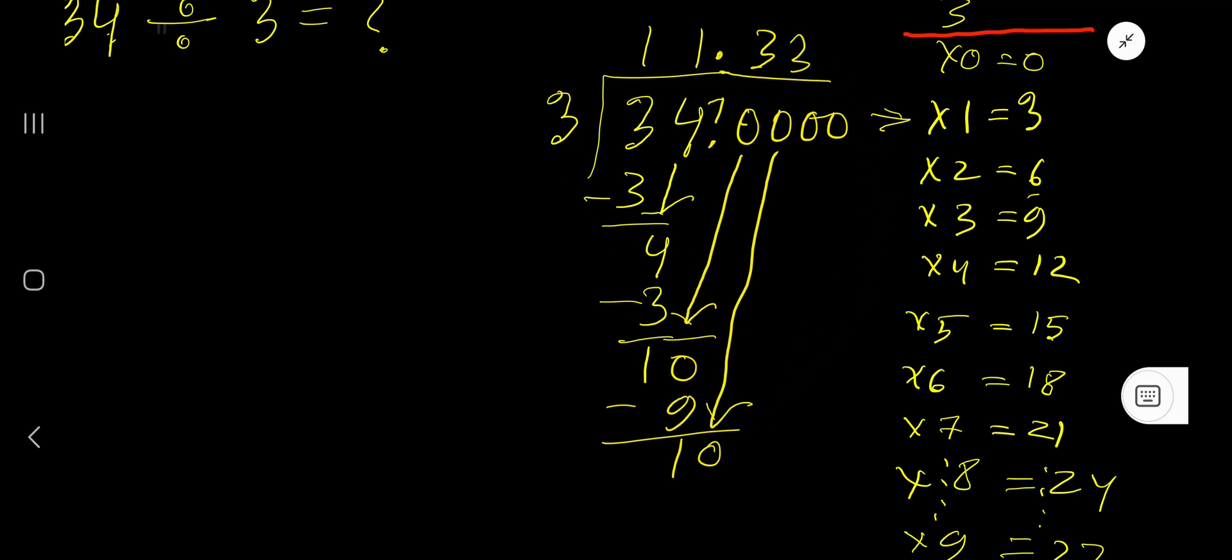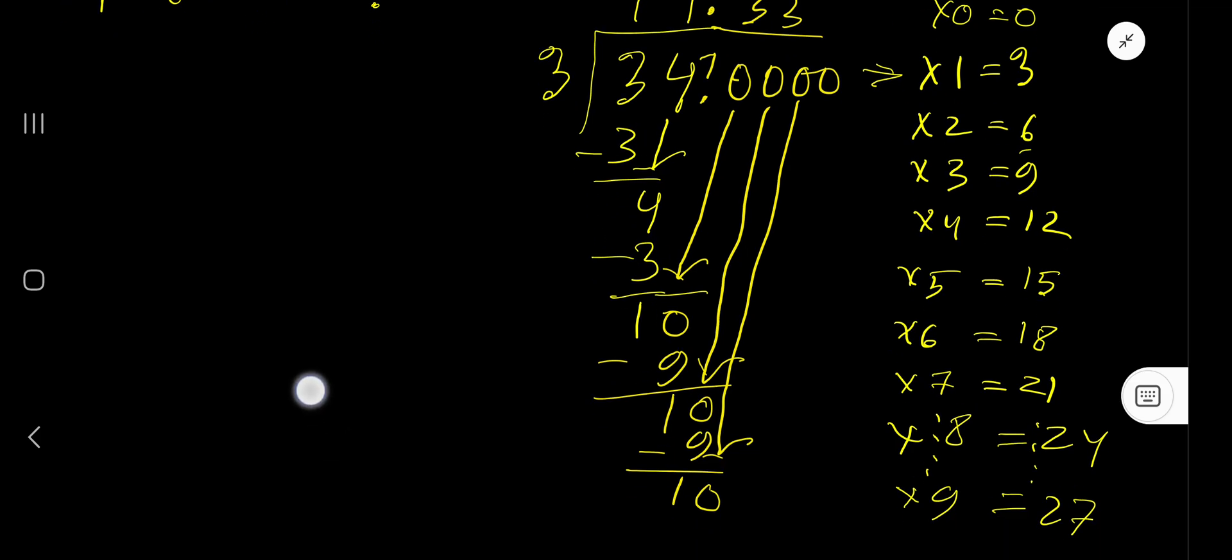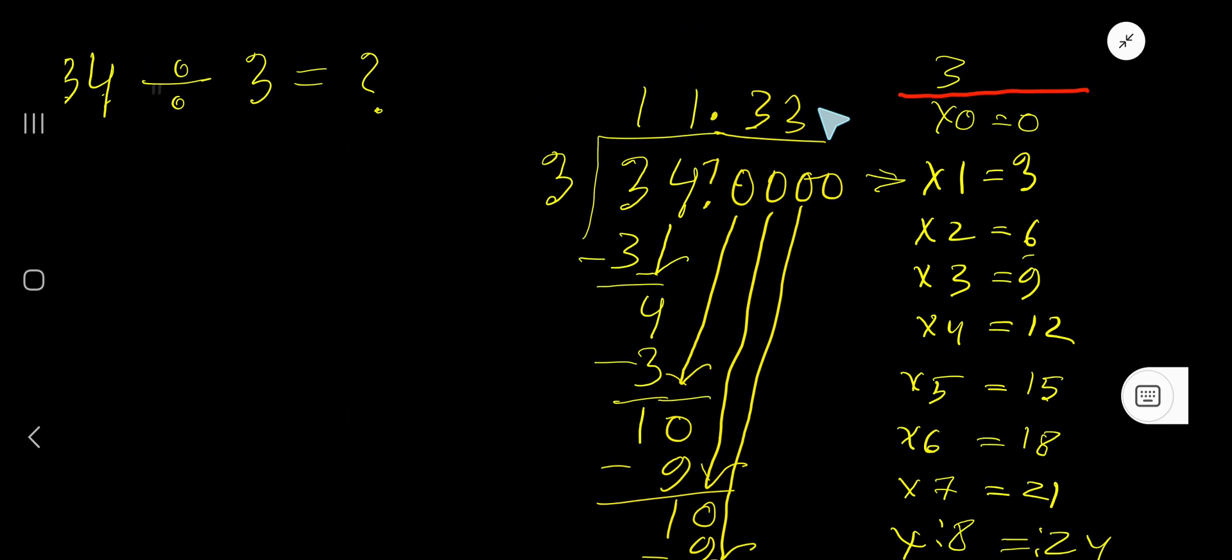Bring down another 0. 3 goes into 10 how many times? Again, 3 times. 3 times 3 is 9. Subtract, you get 1.